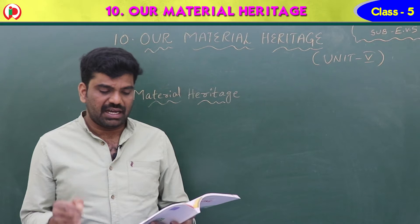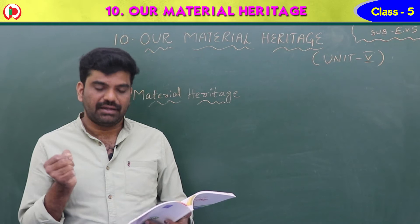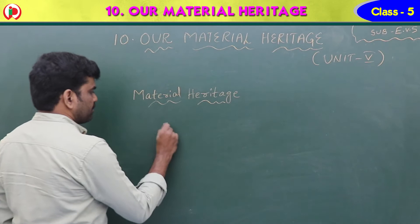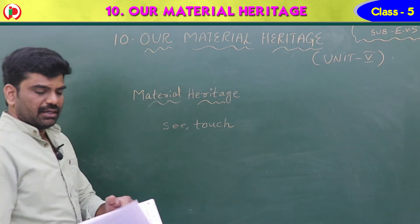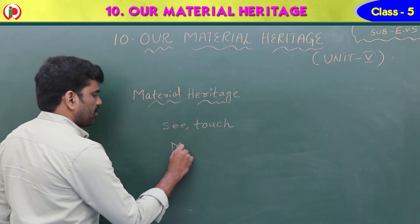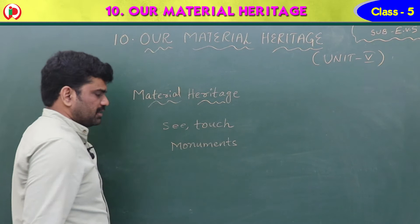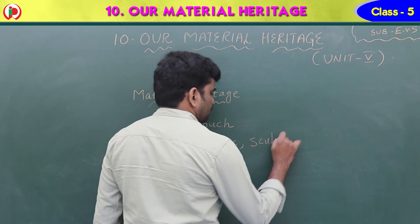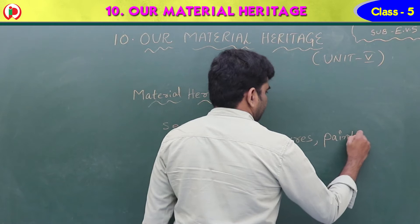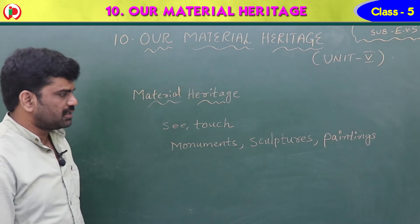The things that can be seen and touched and have historical importance are part of our material heritage. You already know about monuments, sculptures, paintings, and artifacts.